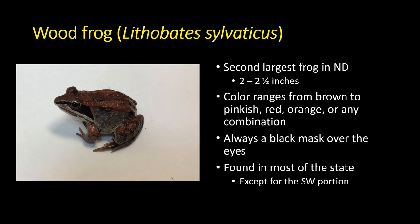The next species is the wood frog, Lithobates sylvaticus. It's about the second largest frog in North Dakota, roughly two to two and a half inches. There's lots of variation in color — browns, pinks, reddish-oranges, salmon colors. In some areas they're sexually dimorphic, with males and females being different colors, though it's unclear if that's the case in North Dakota. They don't have many markings aside from banding on the legs.